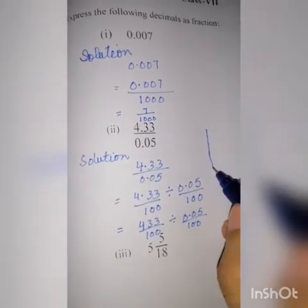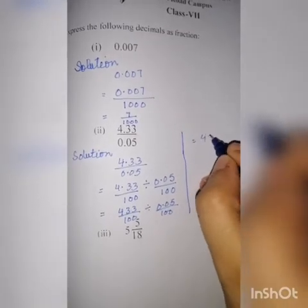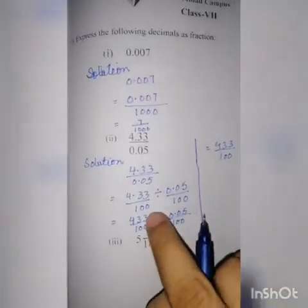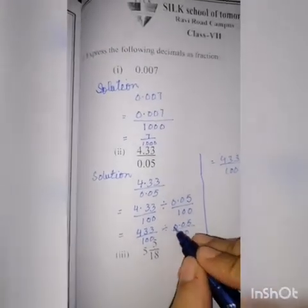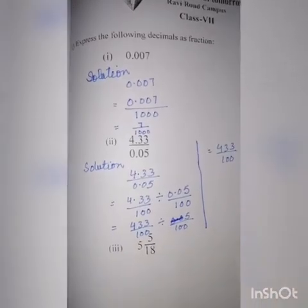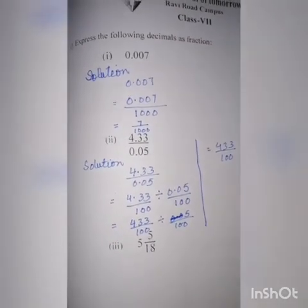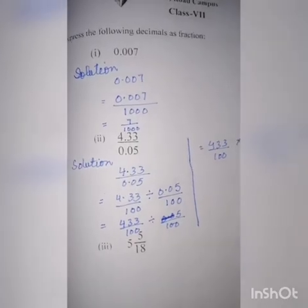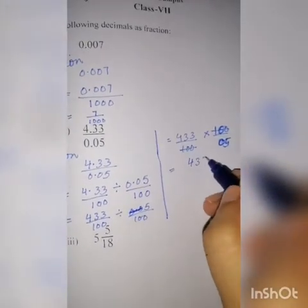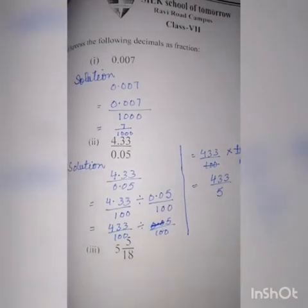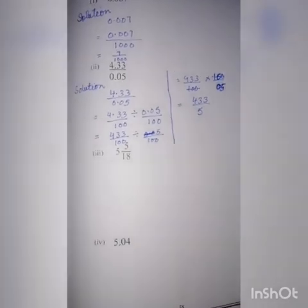आप यहाँ पे center में line कर लेंगे। आप देखें ये 4.33 over 100 ऐसी रहेगी, यहाँ divide है — आप इसको multiply में change कर दें। तो 5 over — जब आप इसे change किया तो यह आएगा 100 और यहाँ पे आएगा 5 — 100 over 5। ये 100, 100 से कट जाएगा तो आपका answer आ गया: 4.33 over 5। Fraction में आ गया लेकिन decimal के बगैर। इसी तरह से आपने ये दोनों questions भी solve कर लेने हैं।